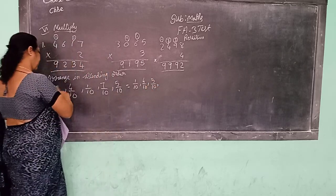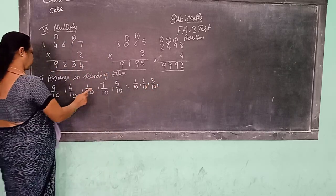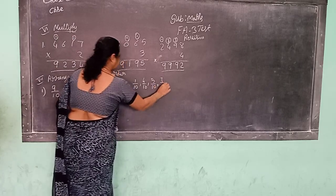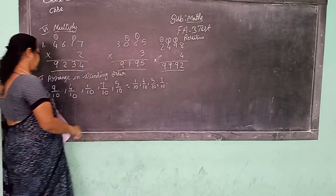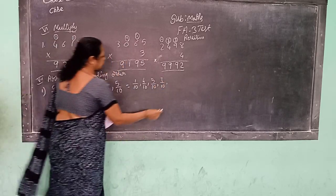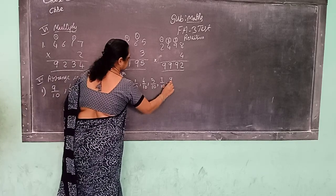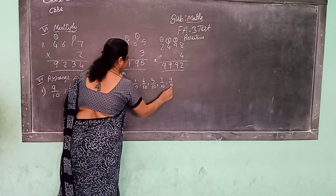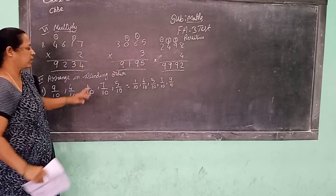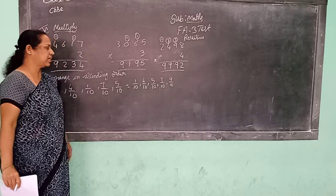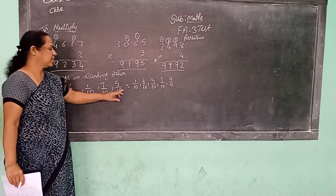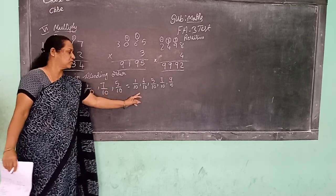Is 6 there? No. 7. Is 8 there? No. 9. See: 1 by 10, 4 by 10, 5 by 10, 7 by 10, 9 by 10. This is ascending order — smaller number to bigger number.